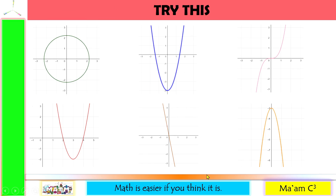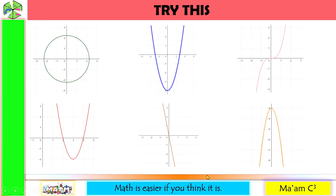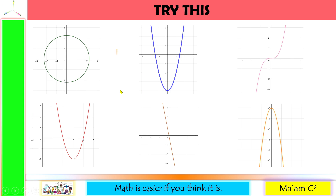Let us determine if the graph implies a quadratic function. If it is not, we use thumbs down; if it is, we use thumbs up. This first graph is a circle — it is not a parabola, so thumbs down.